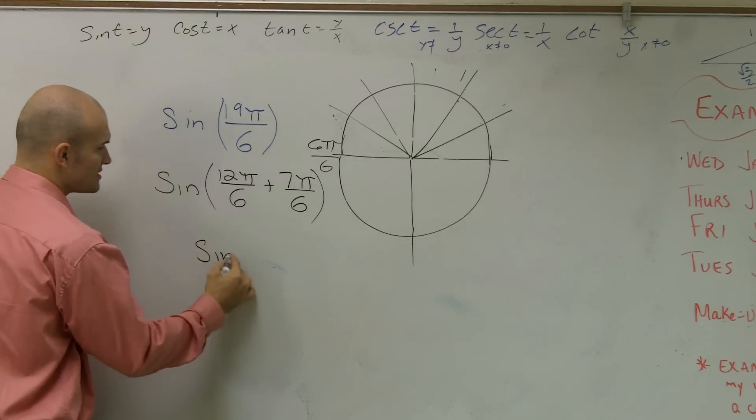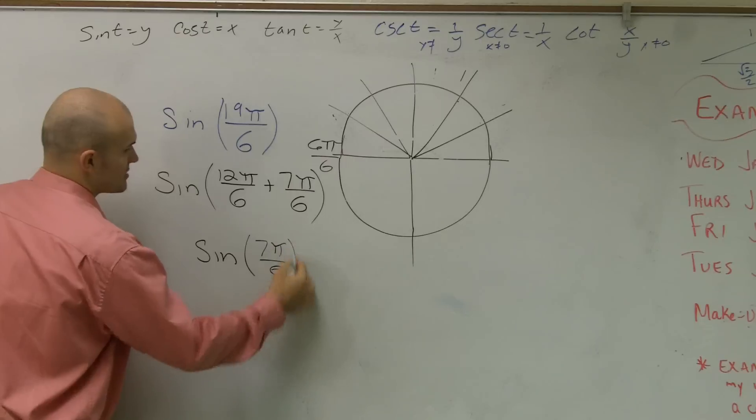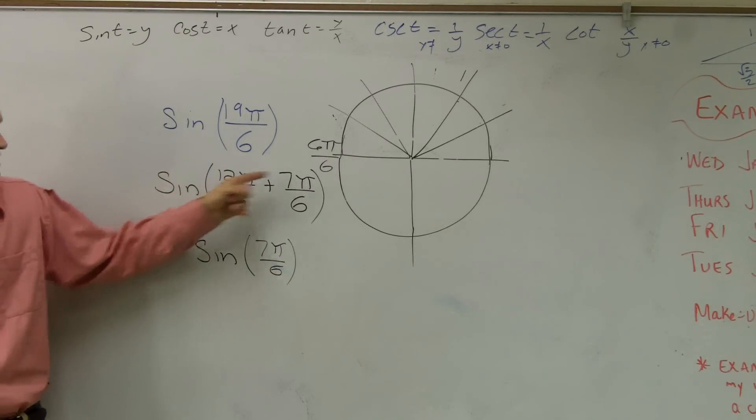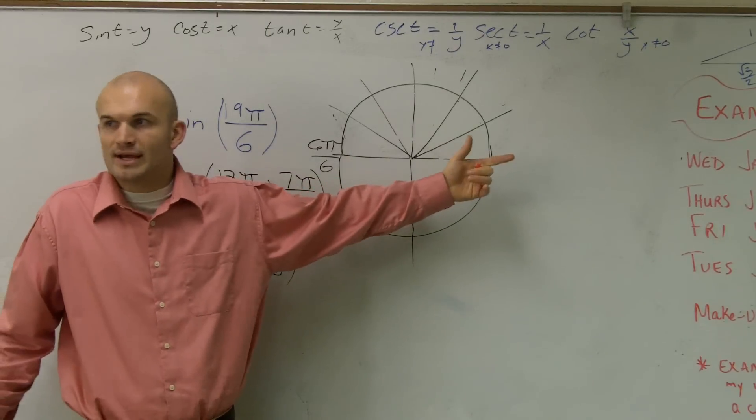So this ends up equaling sine, the same thing as 7π over 6. So that's really what we want to evaluate for, because 12π over 6 is just going to take us all the way around the circle. It's not going to do anything extra for us.